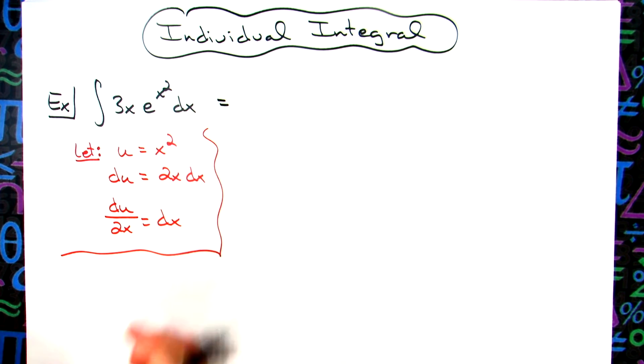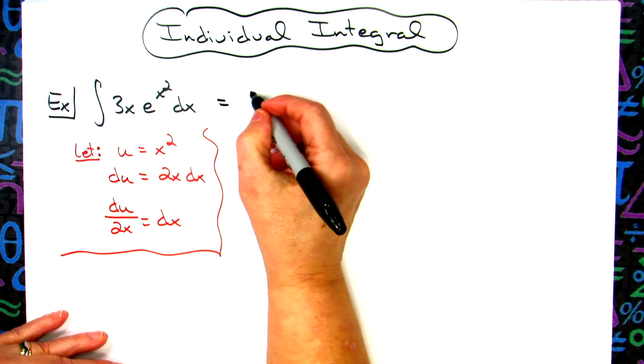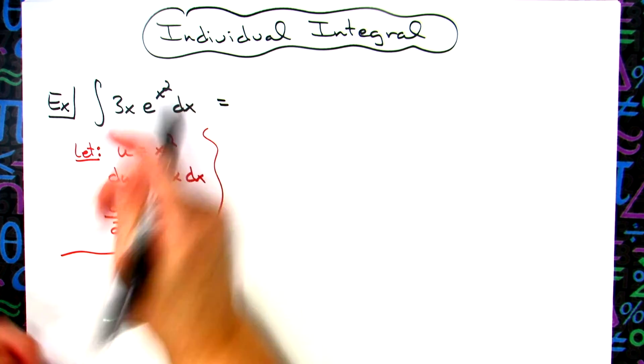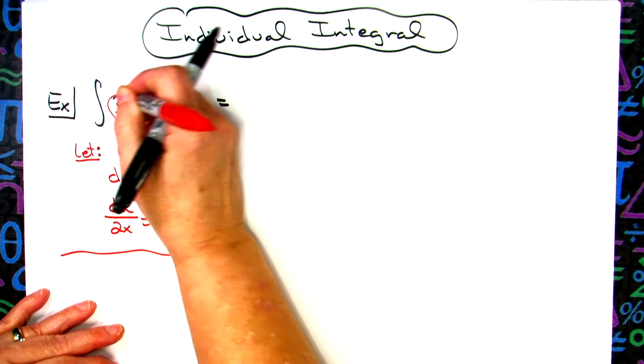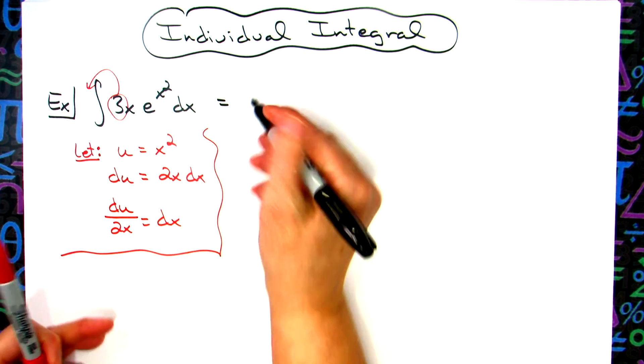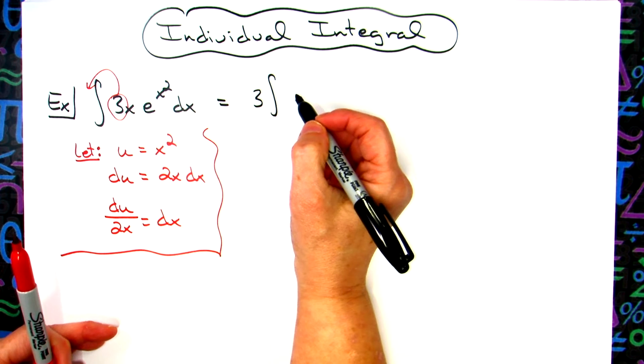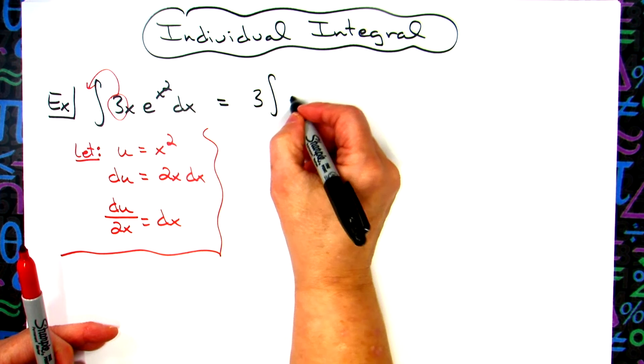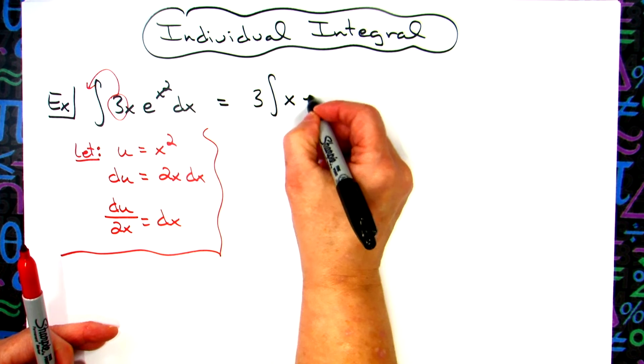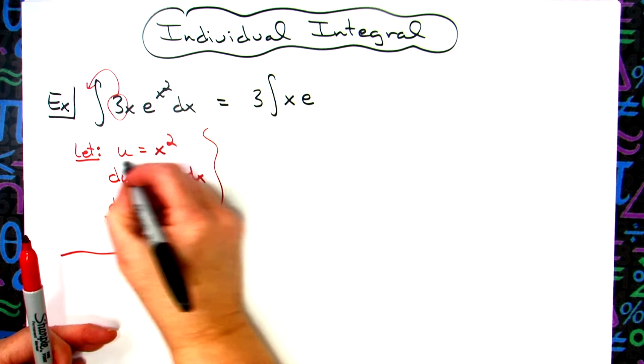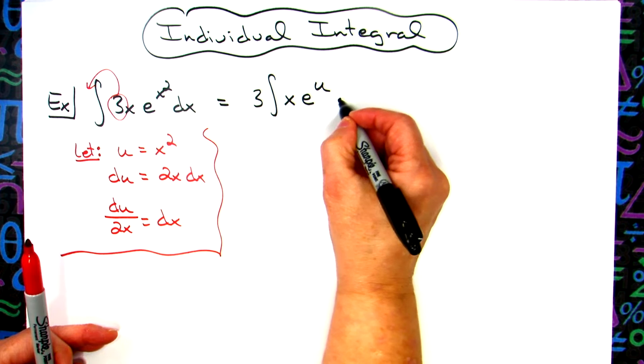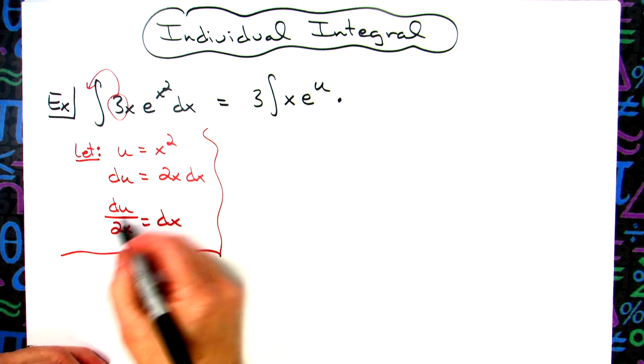First thing I think I'm going to do is take that 3 and pull it out in front. It is a constant, we might as well get that out. Then we'll have the integral. The x is still going to be there. I'm going to have the e, but instead of having x squared I will replace that with my u, and then I will replace that dx with everything that equals, which is du over 2x.